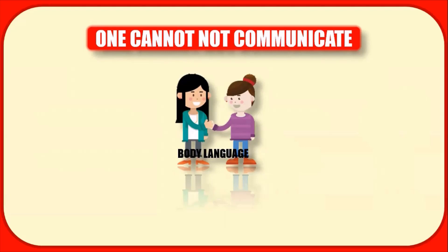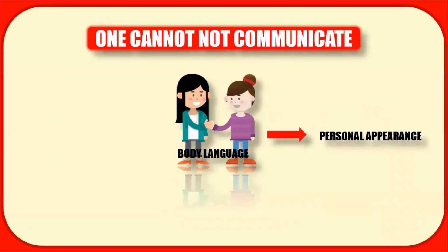Let us discuss certain aspects of body language, starting with personal appearance. It is said that your first impression is your last impression. Personal appearance depends on the clothes we wear, our hairstyle, how neat we are, and the accessories we wear. That indicates how organized we are. It is necessary to understand the occasion and the setting when we dress — for example, a job interview calls for formal attire and language.